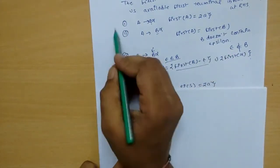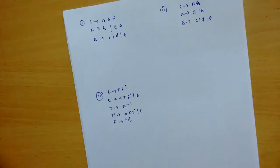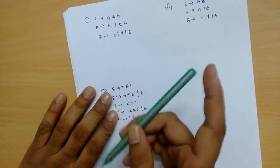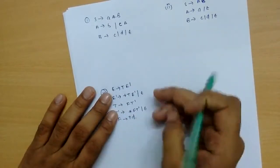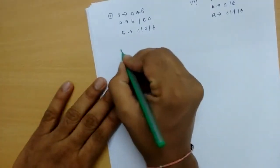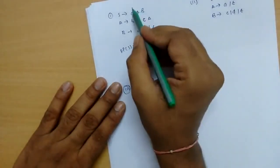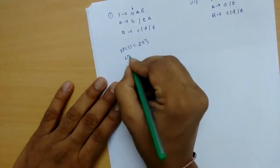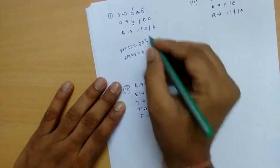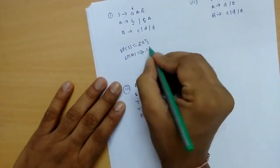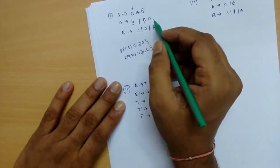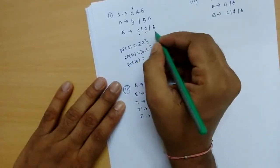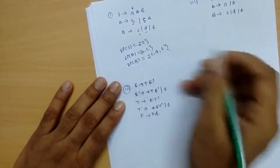We will use these three rules to calculate the first set of any variable. Let's solve a few questions. In the first example, we have a given grammar and we need to calculate the first set of S, A, and B. The first set of S contains A, since A is a terminal — applying Rule 1. First set of A contains B and C. First set of B contains C, D, and epsilon.